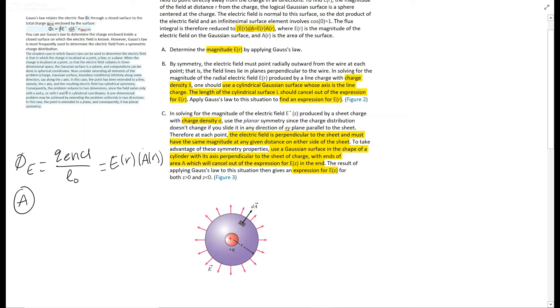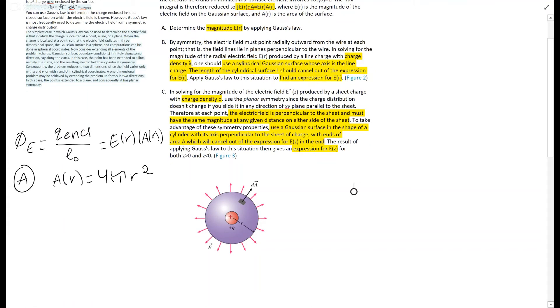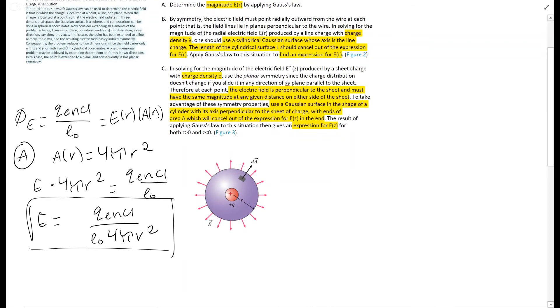So we have a surface, so A_r is surface area of a sphere, which is 4 pi r squared. And so then we're just going to go ahead and solve this for E times 4 pi r squared equal to Q enclosed over epsilon naught. Go ahead and just put that in terms of E_r, and you get Q enclosed over epsilon naught times 4 pi r squared. And this is your answer for A, which is just solving for it. And there's no value, so you're just leaving it in the symbols.